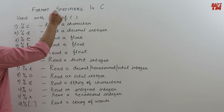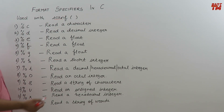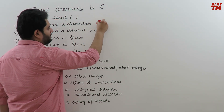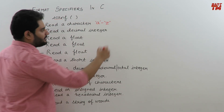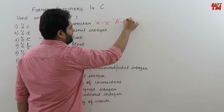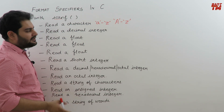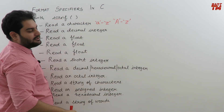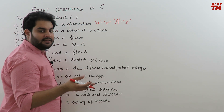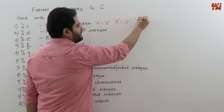There are a total of 12 format specifiers used in C programming language with the scanf statement. %c is used for reading a character. A character can be anything from small a to small z, capital A to capital Z, or any special character from the C character set. A character is always represented in single quotes. Even a digit like 9 placed in single quotes becomes a character.